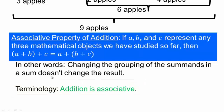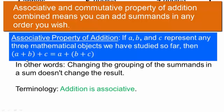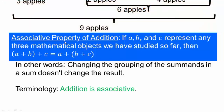You can change the summands and the sum is not affected. Combining associative and commutative properties means you can add objects in any order as long as you add all of them. So I can add A and C first and then B, or B and C first and then A — it does not matter.